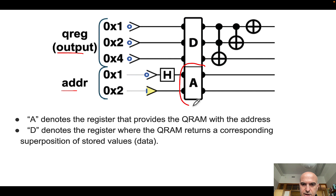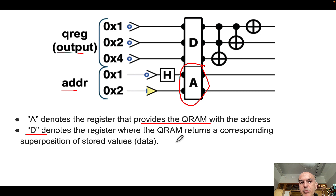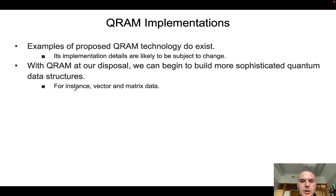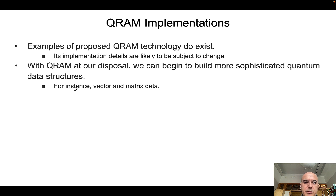The address quantum register, denoted in the quantum circuit, provides the QRAM with the address or addresses in the case of a superposition state. D denotes the register where the QRAM returns the corresponding superposition of stored values corresponding to the provided addresses. There are examples of QRAM technologies being proposed — obviously this is just the beginning, so implementation details are likely subject to change. The important point is that having QRAM at our disposal allows us to start dealing with more sophisticated quantum data structures, for instance vectors and matrix data, which we'll talk about in the next few lectures. This is the last slide of this lecture — talk to you soon.